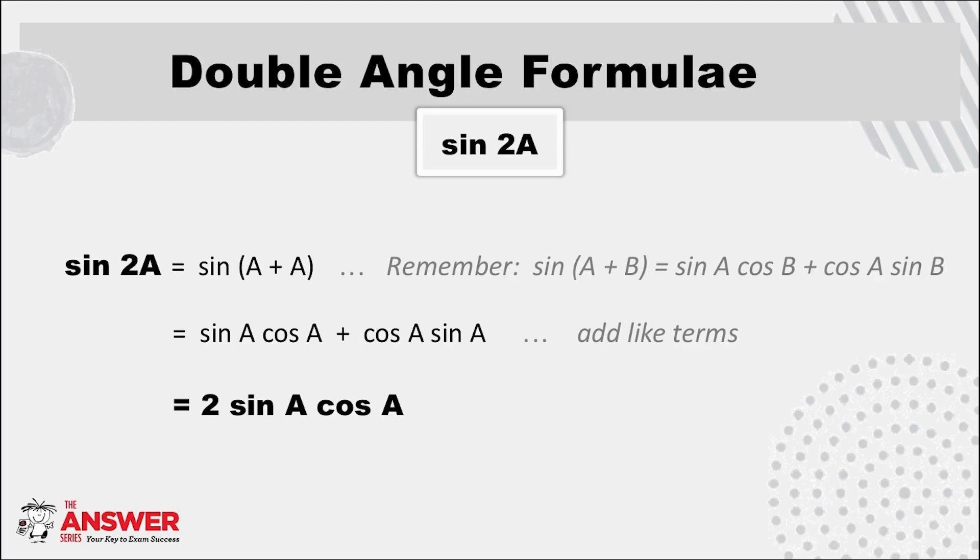So considering sine of 2A first, it is easiest to see how it comes together if we first write 2A as A plus A and then expand using the compound angle formula for sine of A plus B, where the second A will take the place of B.